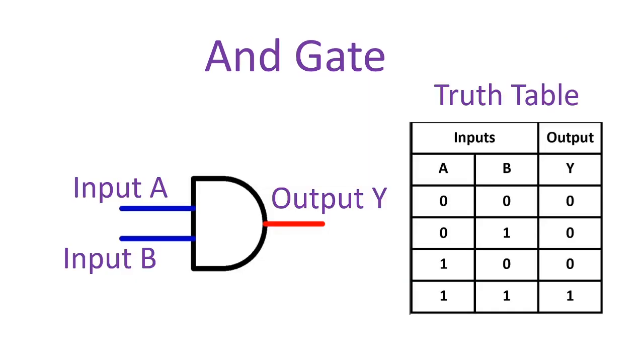And for the AND gate, it behaves according to the truth table. The output of the AND gate is 1 if both input A and B are 1, otherwise it's 0.